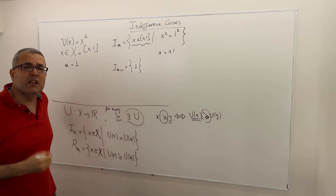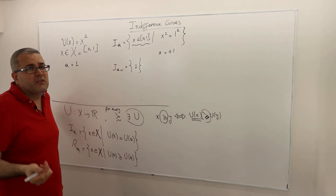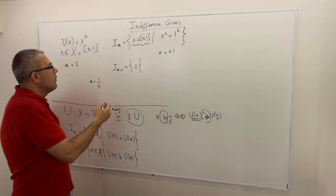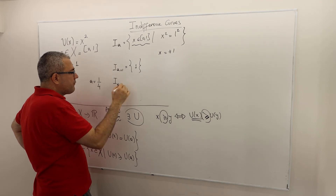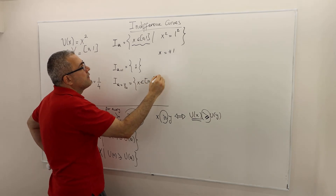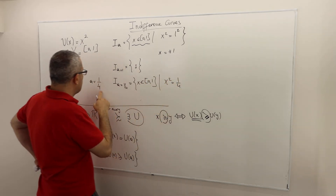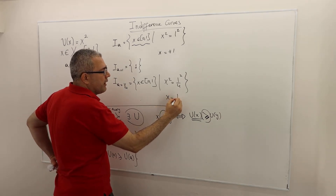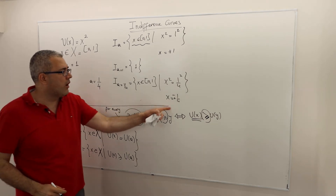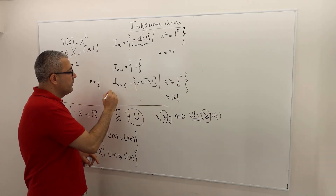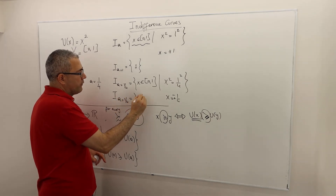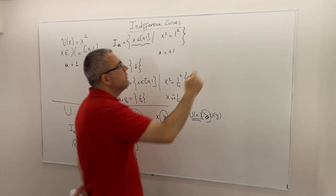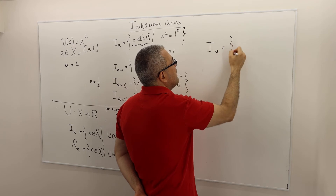What if a = 1/4? Then I(a = 1/4) is the set of x in [0,1] such that x² = (1/4)² = 1/16. So x = ±1/4, but −1/4 is not in the interval, so I(a = 1/4) = {1/4} itself. You probably see the pattern: the indifference curve of a is simply {a} itself.